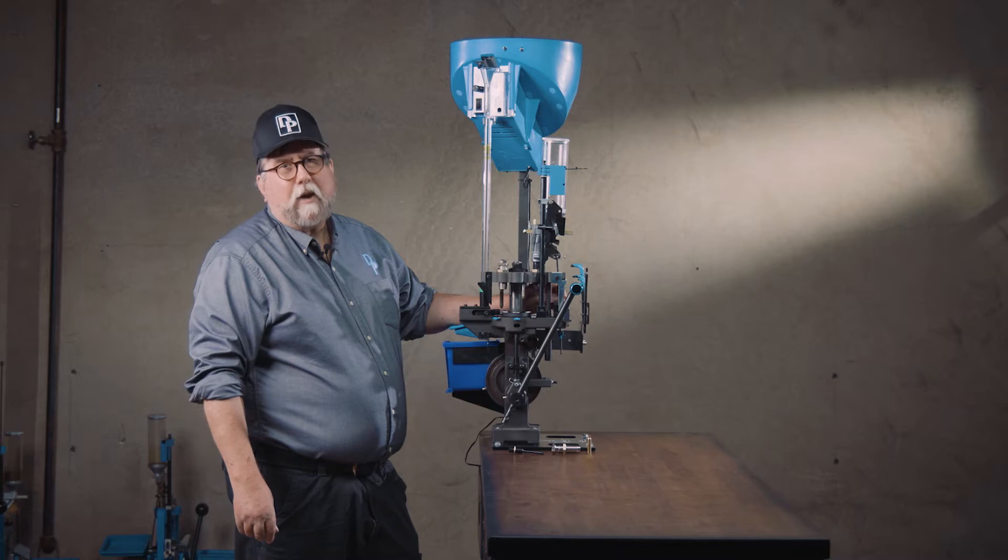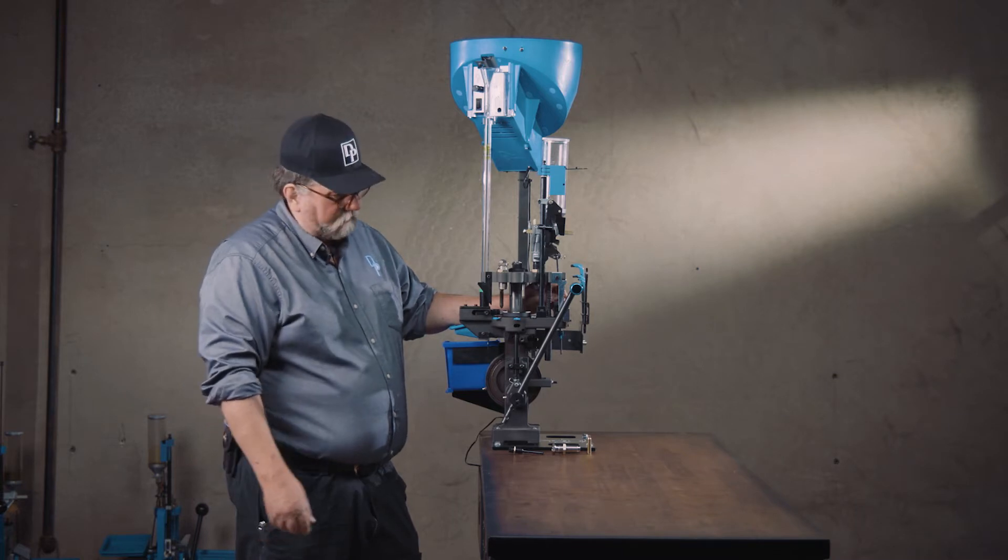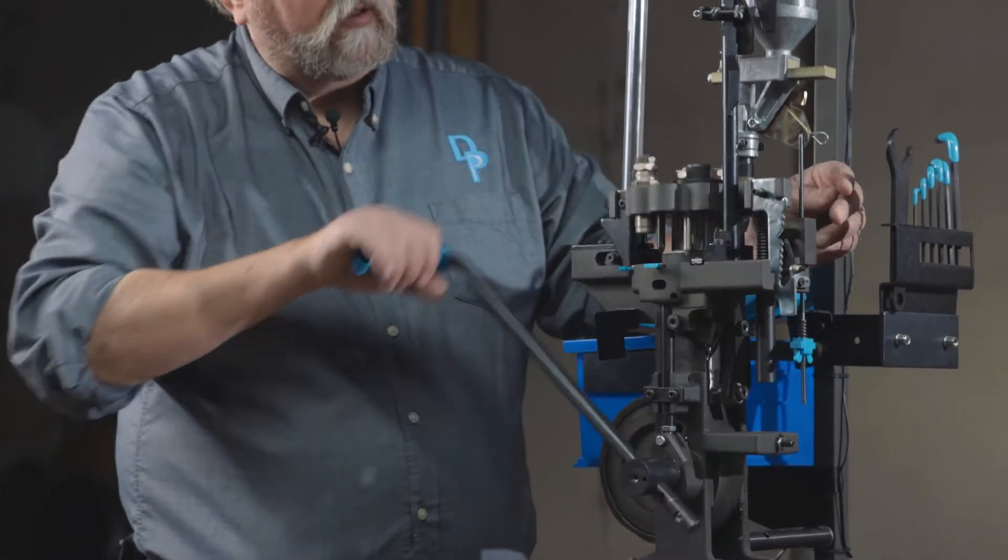Adjusting the Swage Backup Die for a rifle cartridge requires just a couple of simple steps. First, you're going to pull the handle down.